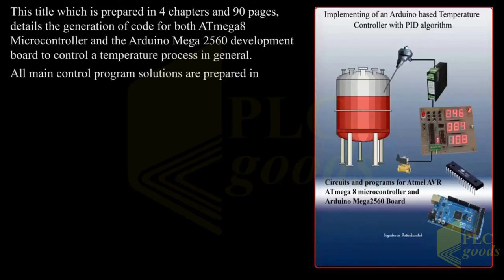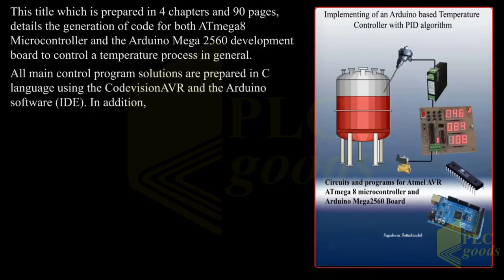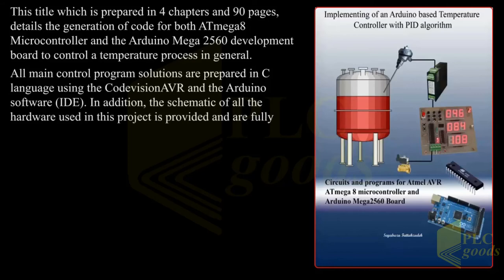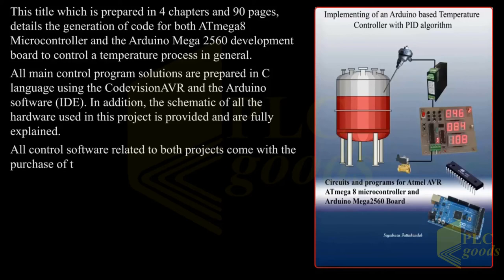In general, all main control program solutions are prepared in C language using the Code Vision AVR and the Arduino software IDE. In addition, the schematic of all the hardware used in this project is provided and are fully explained. All control software related to both projects come with the purchase of the project ebook, and you will not need to develop any extra sketch for any part of these two projects.